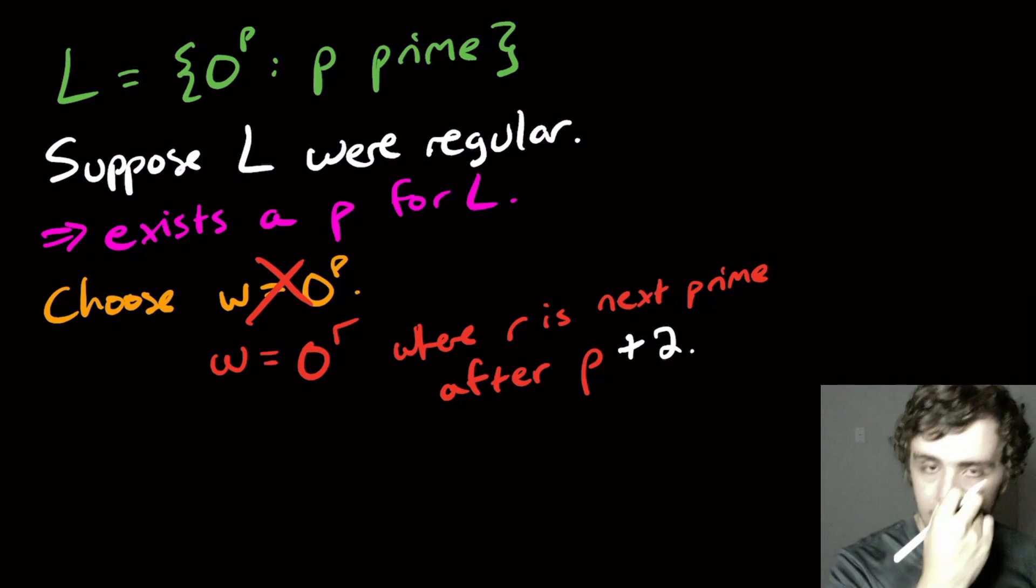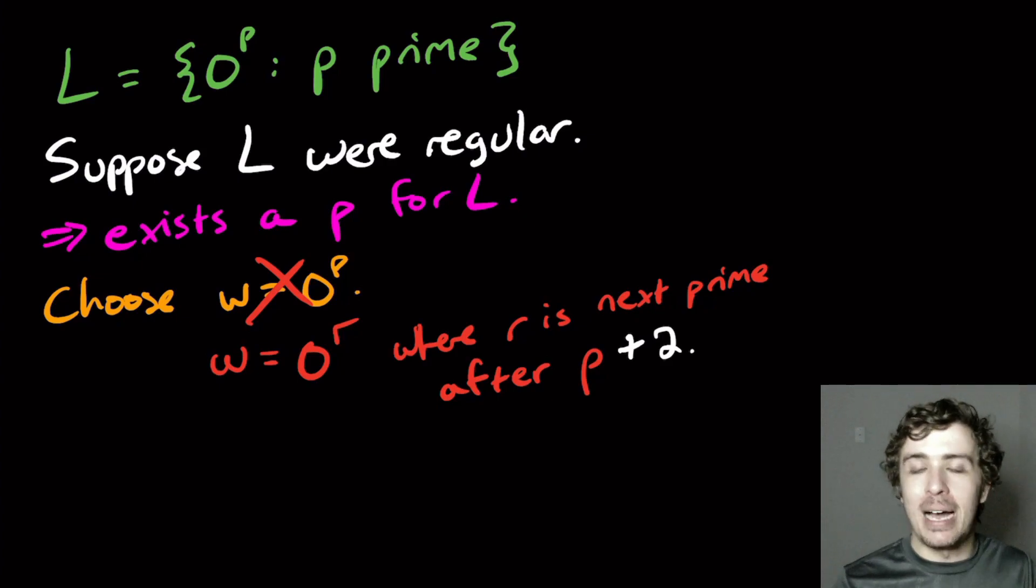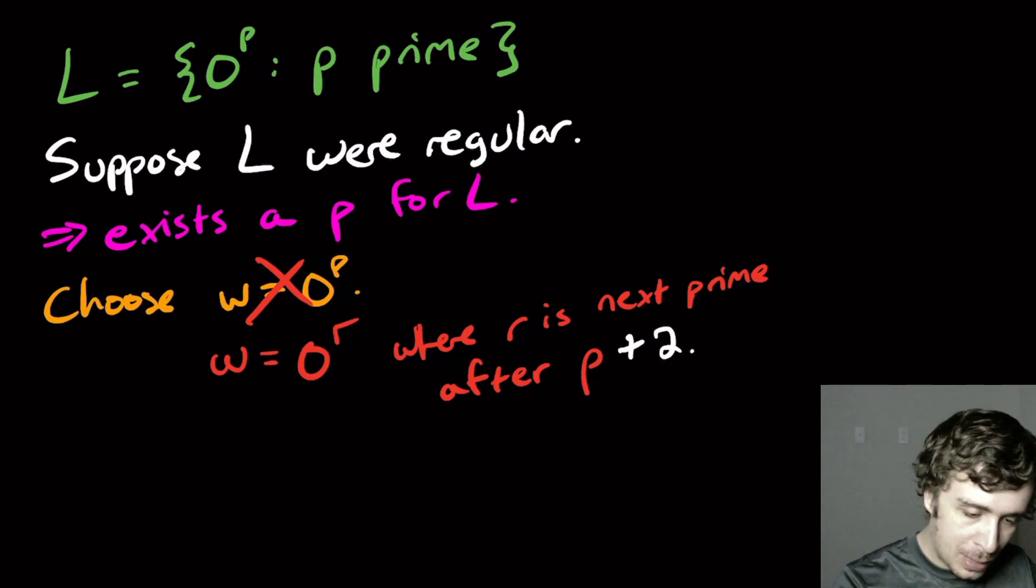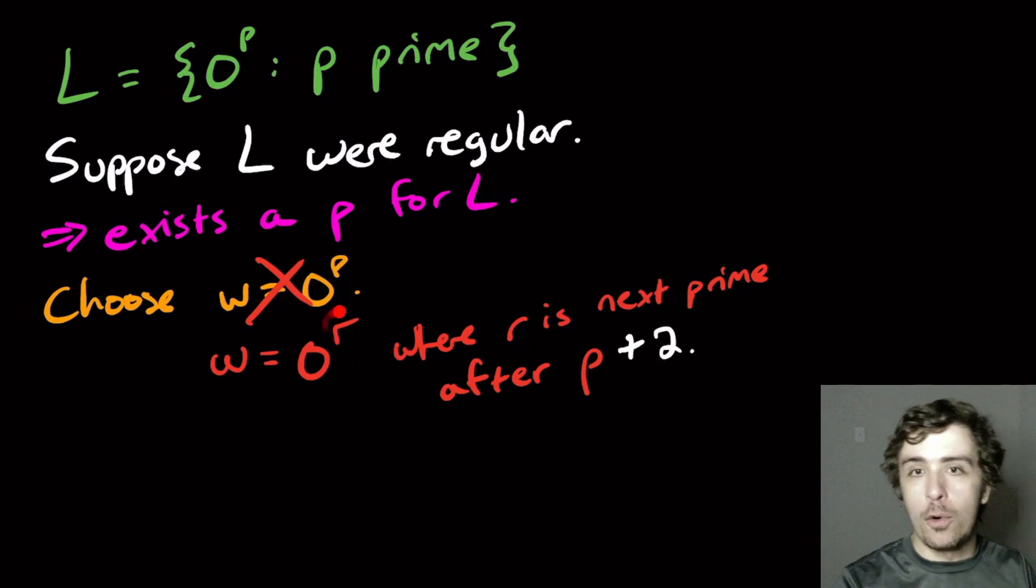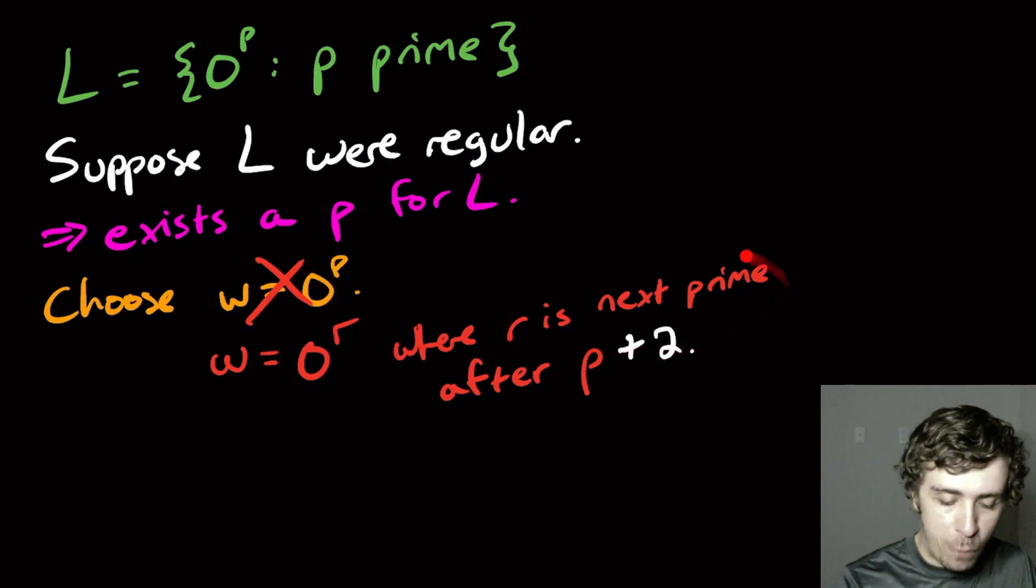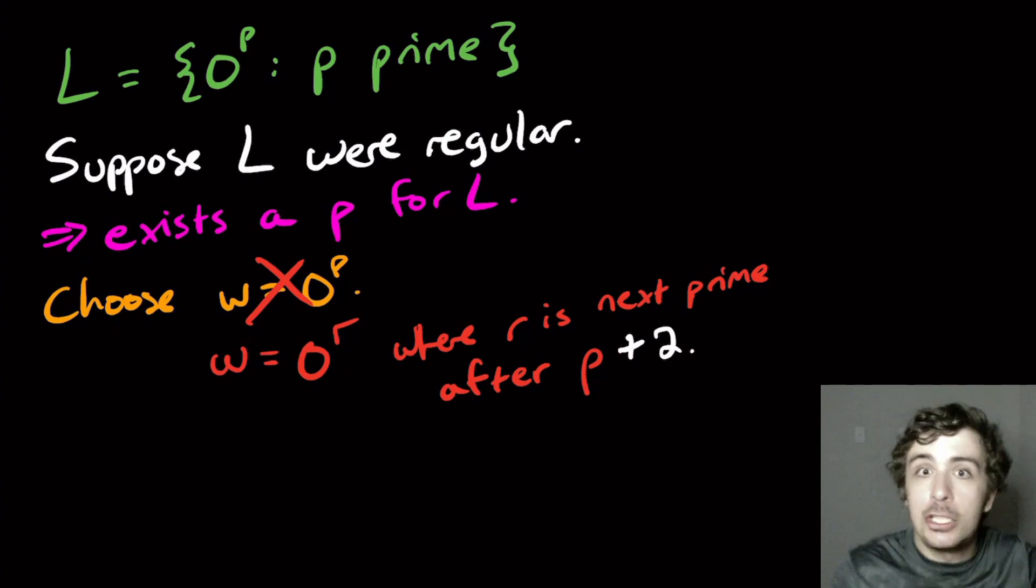There's always a prime at least P plus two, and since it's more than P, this is of length at least P and it's in the language because we forced it to be a prime.